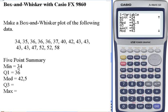The minimum is 34, that's the lowest value in our data set. Q1 is the first quartile. That means 25% or a quarter of the data is below this number, below 36.